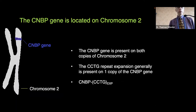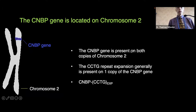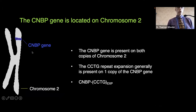The CNBP gene is located on chromosome 2. It is present on both copies — you have one copy of the gene on each chromosome from each parent. Generally, the repeat expansion is present on just one copy. You can see the gene depicted on a small portion of chromosome 2.